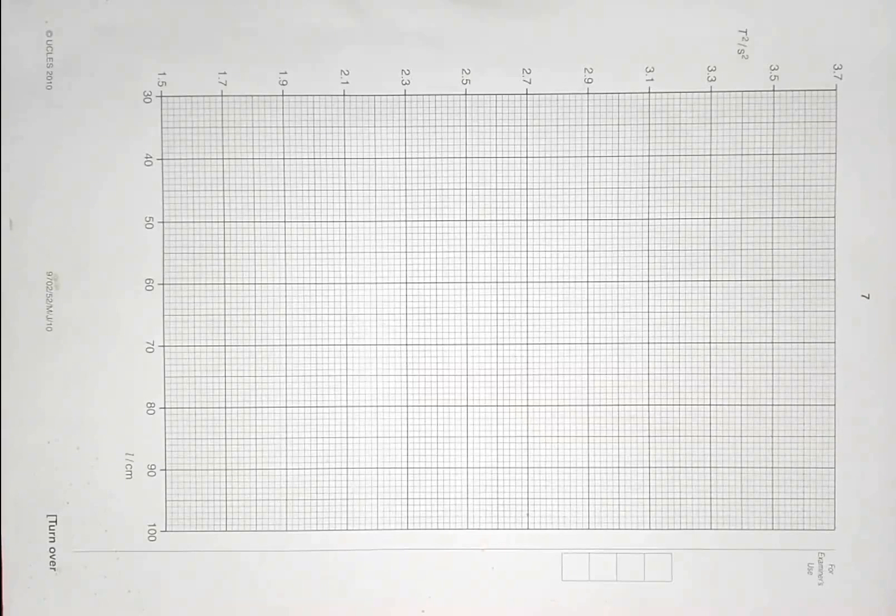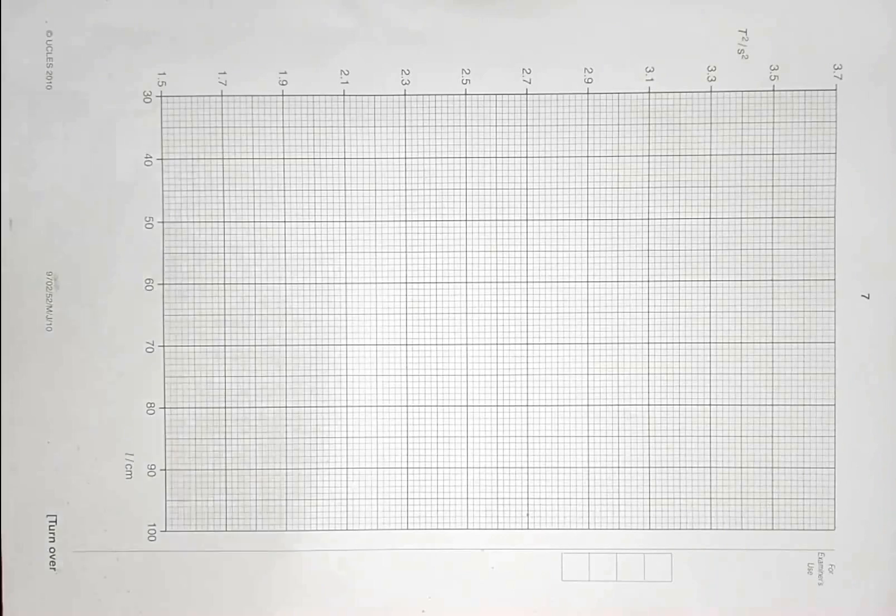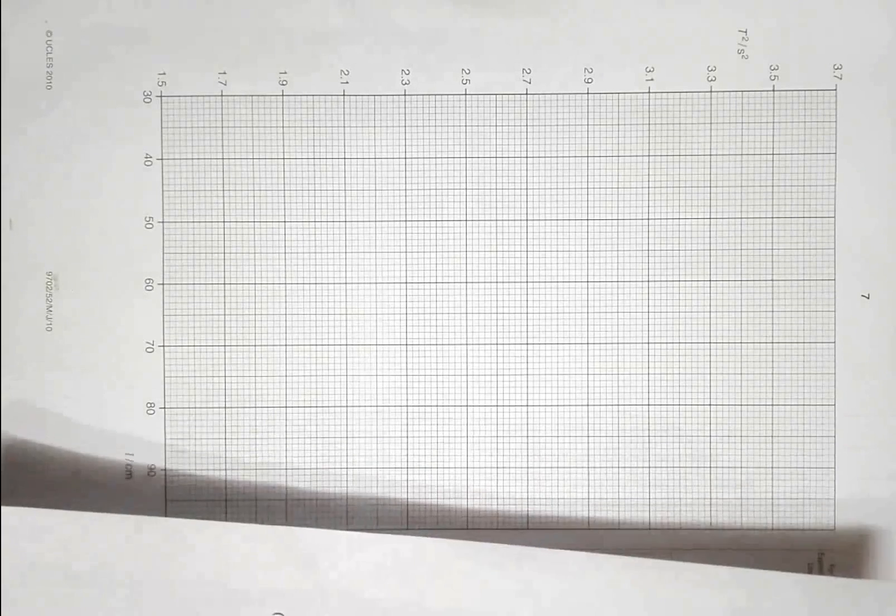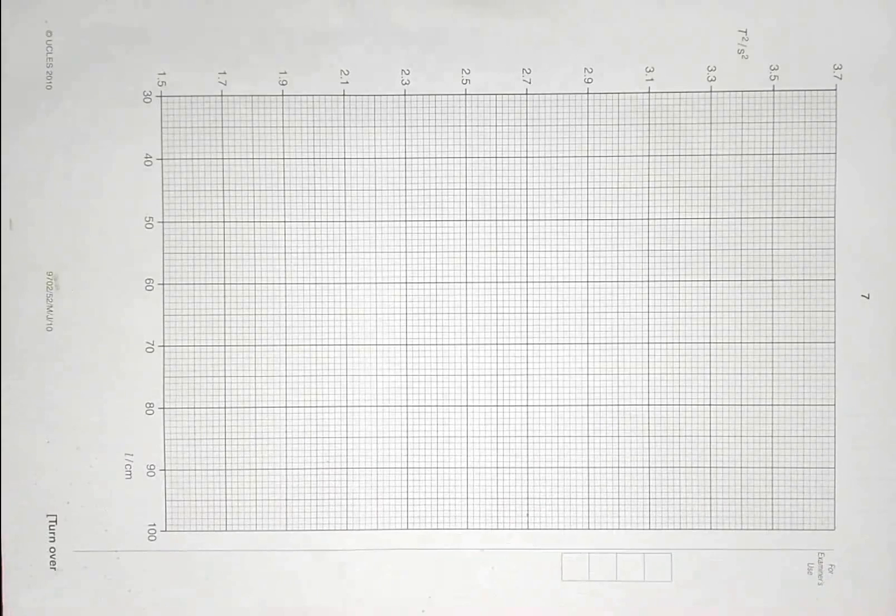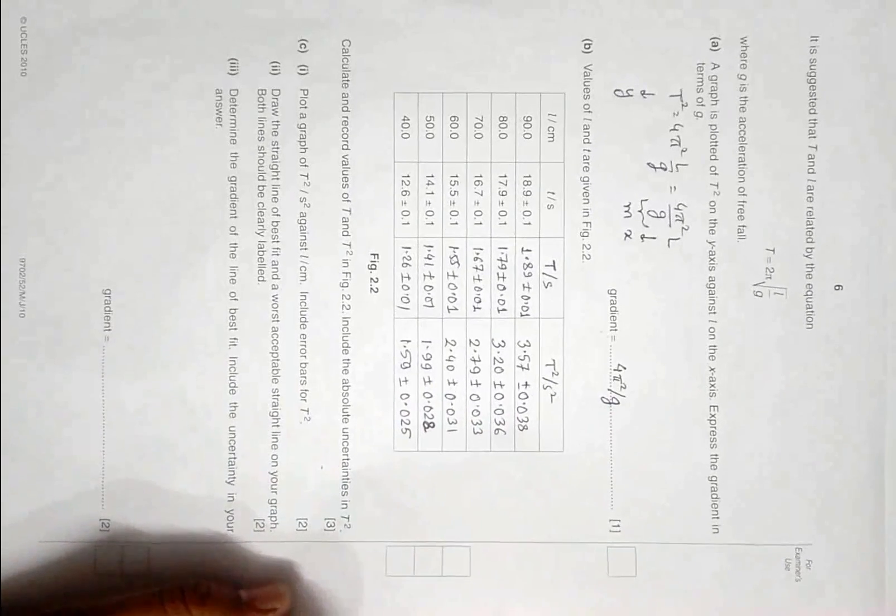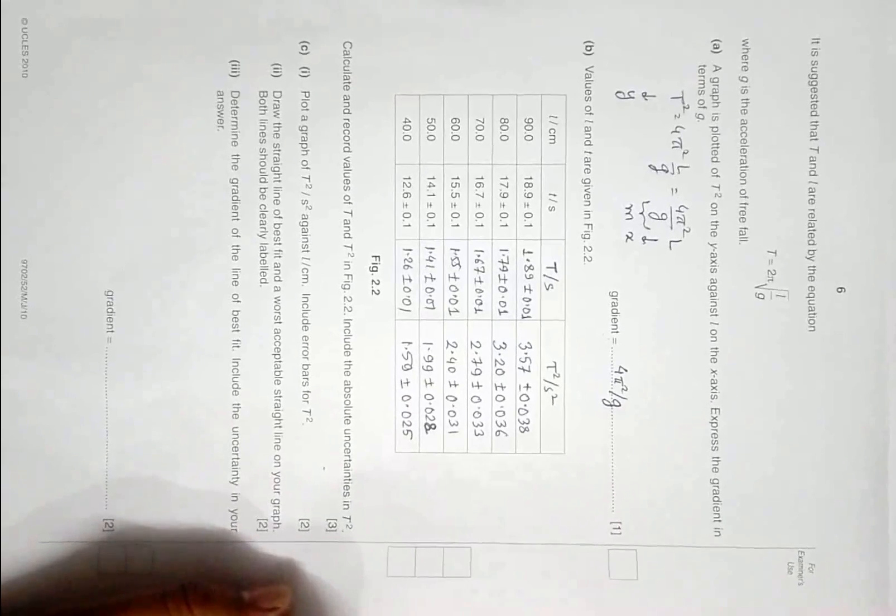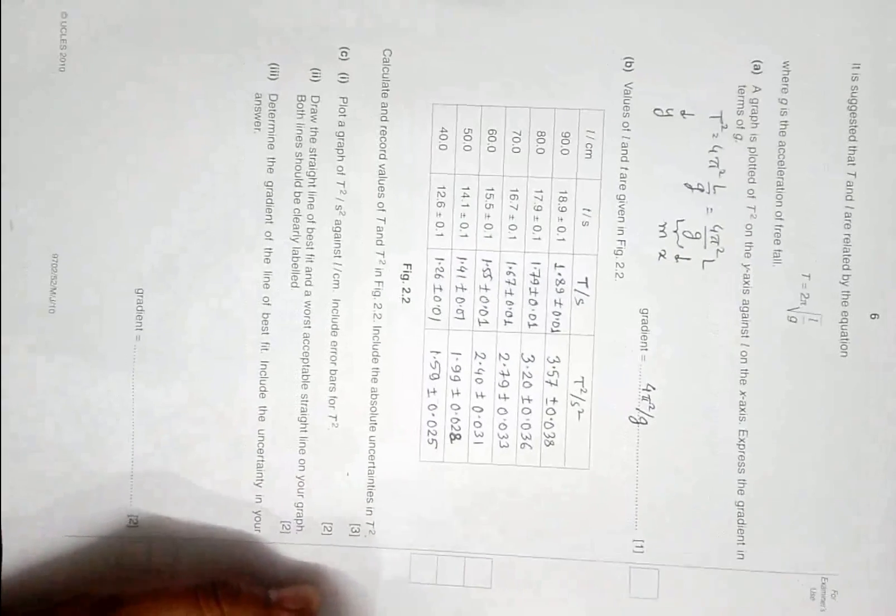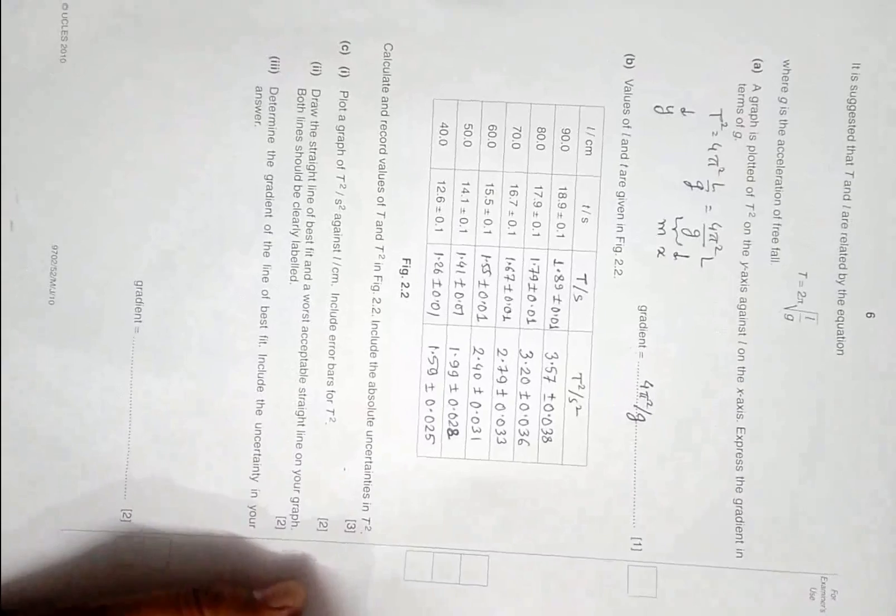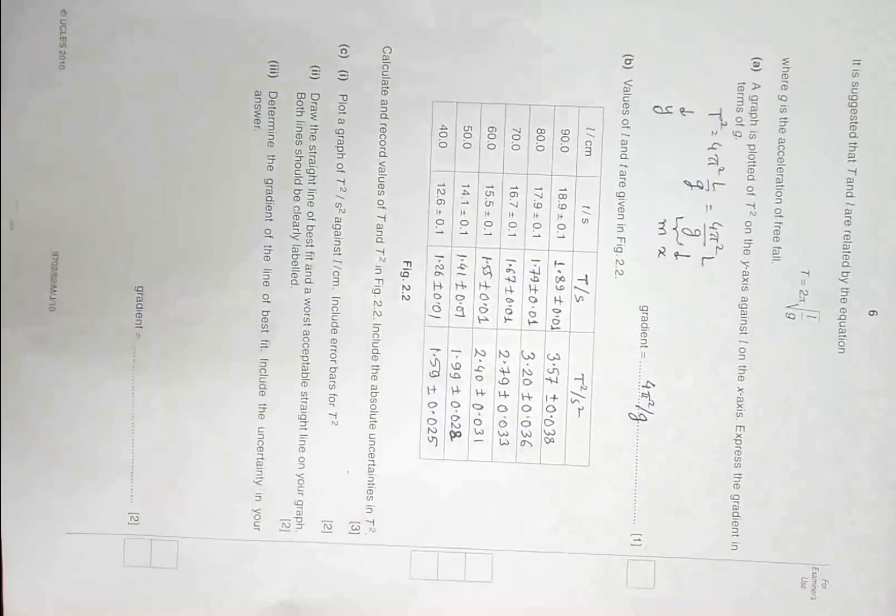This is part 3 of our Paper 5, 2010 major paper question 2 series. In part 1 and 2, we dealt with filling the tables and calculating uncertainties. Now our job is to draw a graph according to the data that we have.